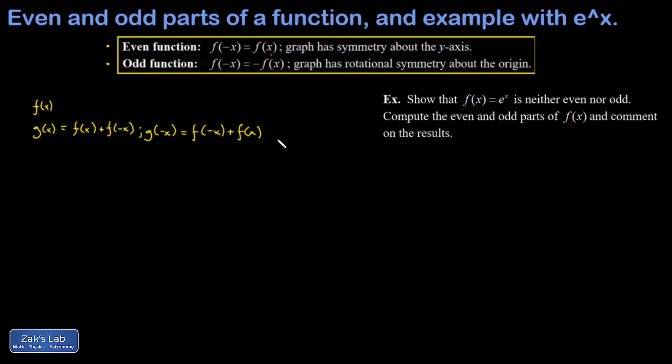Well that's exactly the function we started with, the sum of f of x and f of negative x. So we just showed that g of negative x is equal to g of x and therefore g is even. There's an equally cool trick for creating an odd function out of any function f. All I do is put a minus sign in front of that second term. h of x is f of x minus f of negative x.